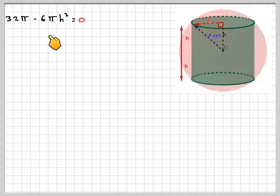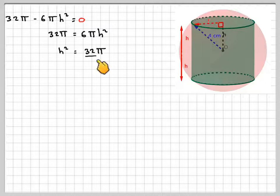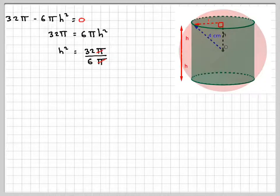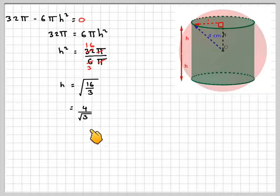So doing that, so that means that 32π, taking this over here, we're going to have 6π h squared. Therefore, h squared will be 32π over 6π. The π's will cancel out. And then the 2 goes into that 16 and into 6, 3. So we're going to have h is going to have to be the square root, the positive square root is a length of 16 over 3. The square root of 16 is 4, so we get 4 over root 3.